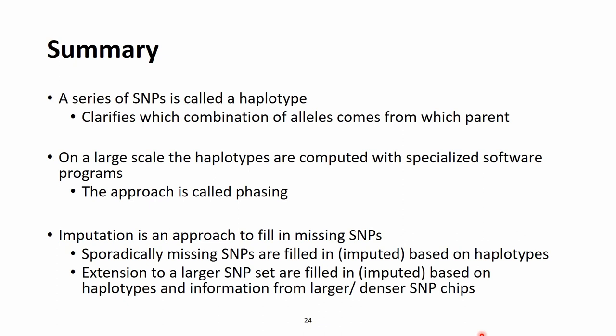We talked about haplotypes, which are a series of SNPs that clarify which combination of alleles comes from which parent. To perform these computations on a large scale or on real genotypes, we need to use computers. There is a range of specialized software programs that does this job, and the approach itself is called phasing.